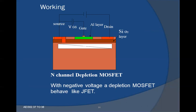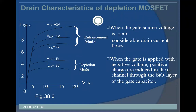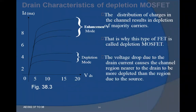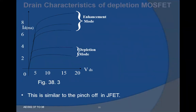The N-channel depletion MOSFET, with negative voltage applied, behaves like a JFET. In the drain characteristics of depletion MOSFET, when gate-source voltage is zero, considerable drain current flows. When the gate is applied with a negative voltage, positive charges are induced in the N-channel through the silicon dioxide layer of the gate capacitor. Conduction in the N-channel is due to electrons — majority carriers — so the induced positive charges make the channel less conductive and drain current is reduced. The distribution of charges causes depletion of majority carriers, which is why this type is called a depletion MOSFET. The voltage drop due to drain current causes the channel region near the drain to be more depleted than near the source, similar to pinch-off in JFET.